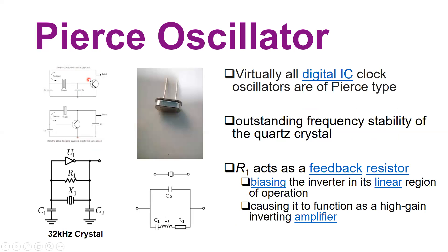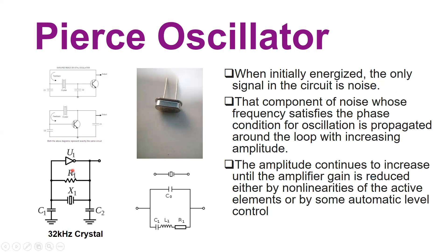This circuit configuration is the most commonly used in microcontroller boards to produce a frequency of 32 kilohertz. Virtually all digital IC clocks use oscillators of this type, called the Pierce oscillator. The two BJT versions are also shown. In this circuit, R1 acts as a feedback resistor; its purpose is to bias the inverter in its linear region and cause the amplifier to function as a high-gain inverting amplifier.